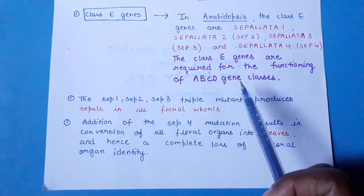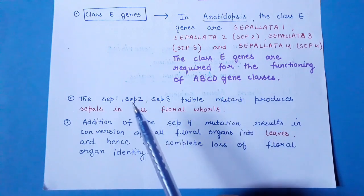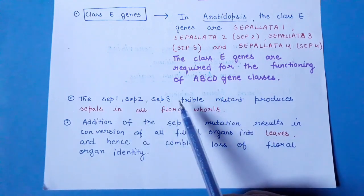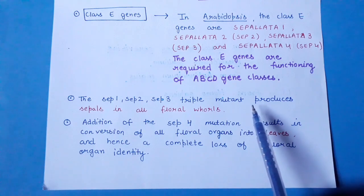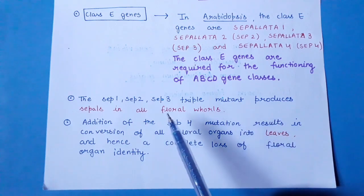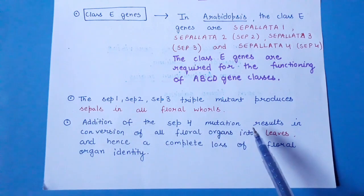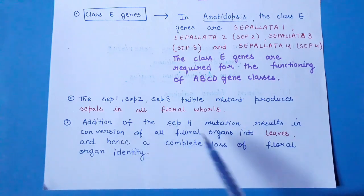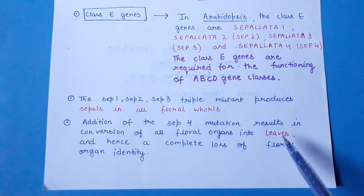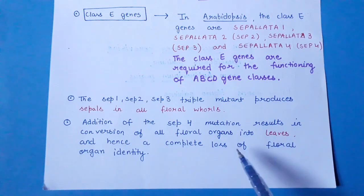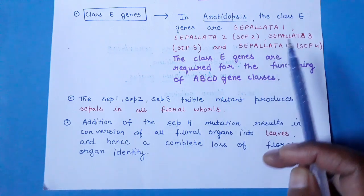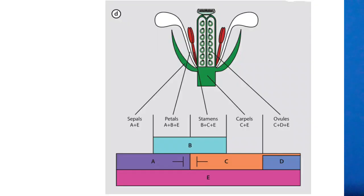Class E genes (SEP1–4) are required for the normal functioning of the A, B, C, and D gene classes. When SEP1, SEP2, and SEP3 are mutated together (triple mutant), all floral whorls produce only sepals. Adding the SEP4 mutation converts all floral organs into leaves, indicating complete loss of floral organ identity. This demonstrates that Class E genes are essential for the functioning of all other floral gene classes.